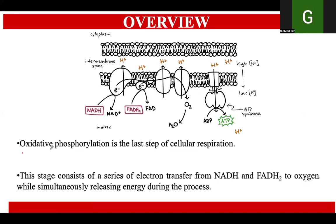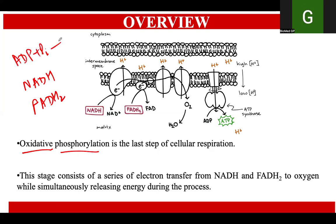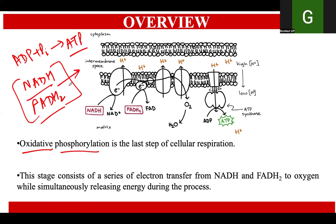This electron transport chain is also known as oxidative phosphorylation because it involves the oxidation of the electron carriers, particularly NADH and FADH2, and also the phosphorylation of the ADP molecule for the production of ATPs. We will see how the electrons are extracted from these high-energy molecules and carried forward into the electron transport chain for the production of ATP molecules.